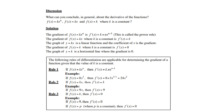Let's look at the first example. The following rules of differentiation are applicable for determining the gradient of a function, given that k is a constant. Rule 1: you multiply the exponent n with k and simultaneously subtract 1 from n. For example, if f(x) is x to the power 3, then the derivative will be 3 times 8, which is 24, and 3 minus 1 is 2. Rule 2: the derivative of kx is k, so 9x will be 9. And Rule 3: the derivative of a constant, such as 9, is 0.